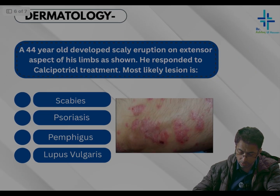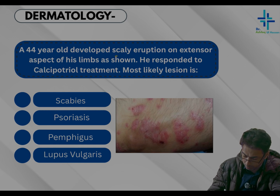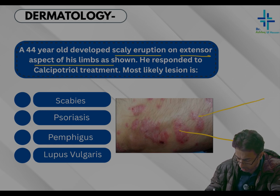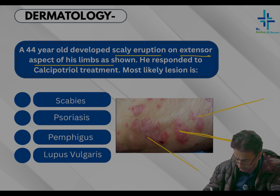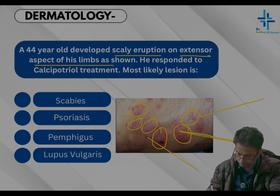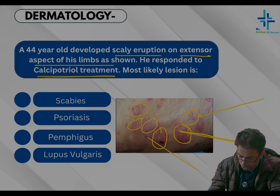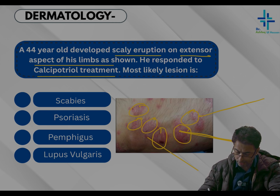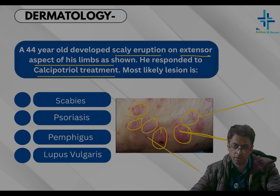A question from dermatology: a 44-year-old developed scaly eruptions on the extensor aspect of his limbs, as shown in the image. There are multiple lesions. He responded to calcipotriol treatment, so there is a positive response to that medicine. The options for the most likely diagnosis are scabies, psoriasis, pemphigus, and lupus.